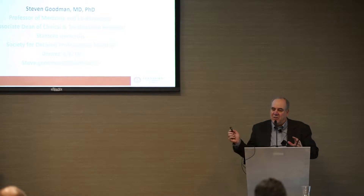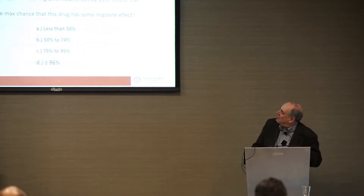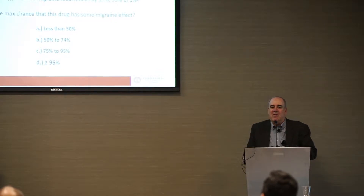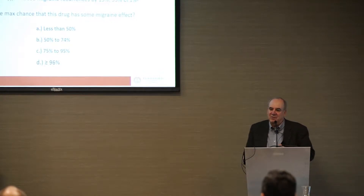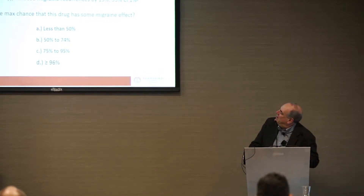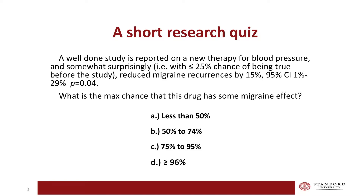I want to start with a little quiz. This will tell me a lot about you and maybe tell you something about yourselves, and tell me how fast I can go through some slides. A well-done study reported on a new therapy for blood pressure control. Somewhat surprisingly, those who were on this drug and had migraines reported a reduced migraine recurrence rate by 15% with a p-value of 0.04 and a confidence interval which doesn't include zero.